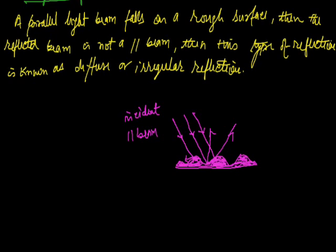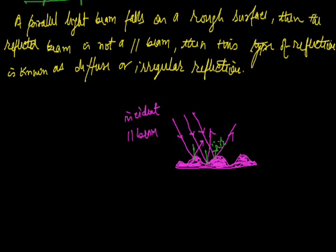These are the normals at different points on the rough surface. Here is a normal at this point, here will be a normal, and here is a normal at this point. Normals are drawn at each point. The angle of incidence at each point leads to a reflected ray in a different direction. Both laws of reflection are still valid here.